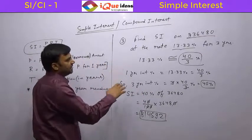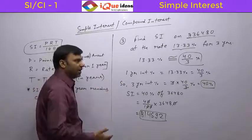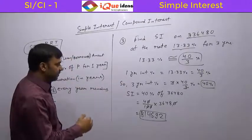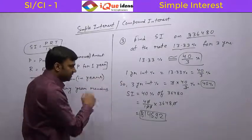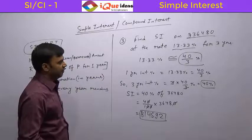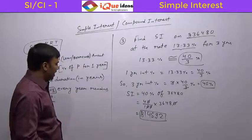So this calculation is much easier than using PRT/100 directly. You have to be careful — sometimes PRT/100 will be really easy to use, and in some cases using the percentage value will be more helpful. Choose your method depending on the difficulty and requirements of the question.